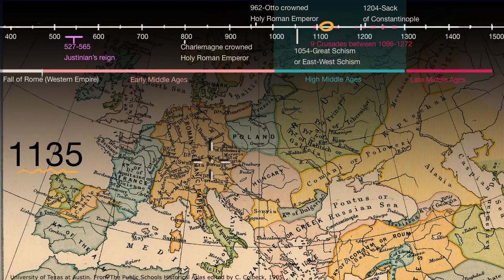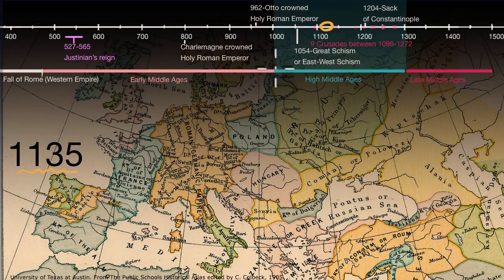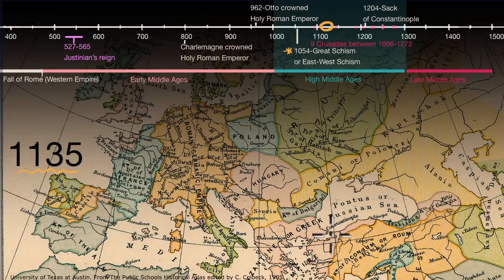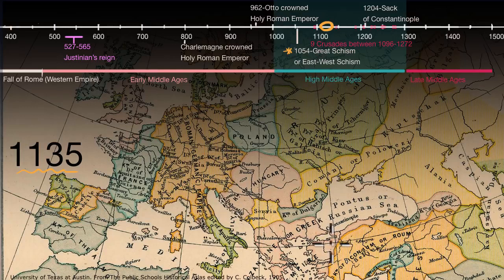The Byzantine Empire is continuing to lose territory, and the Muslim Empires — in this case the Seljuk Turks — are able to take even more. By the time of this map, you also have in 1054 the Great Schism between the Latin church centered at Rome and the Eastern Greek church centered at Constantinople. This schism between what eventually becomes the Roman Catholic Church and the Eastern Orthodox Church is one of the things the High Middle Ages is most known for.